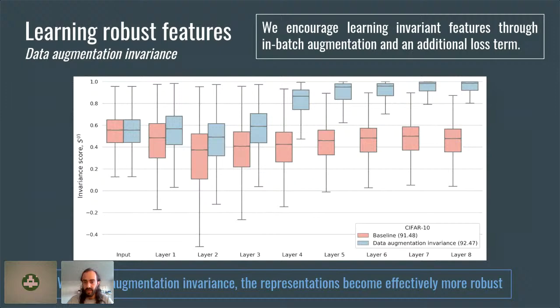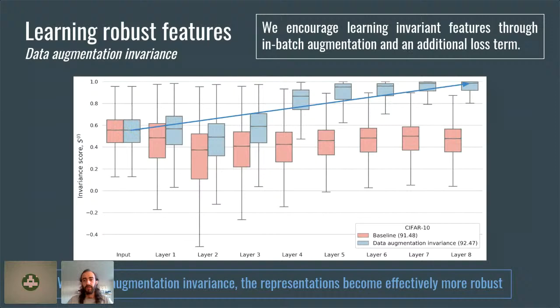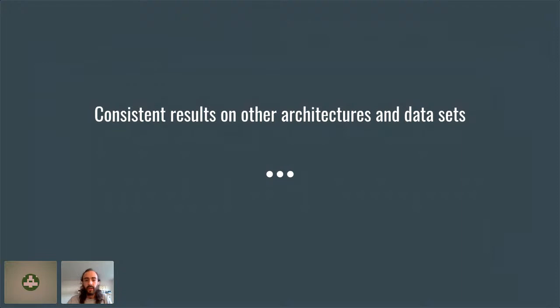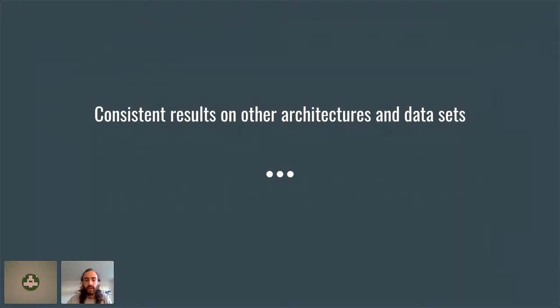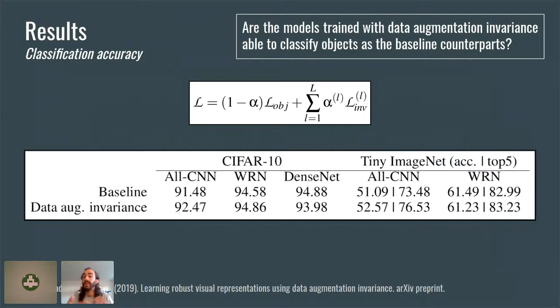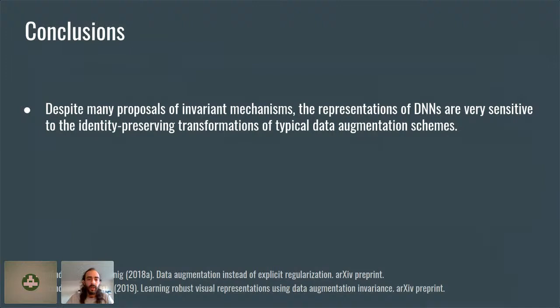Basically I compute the ratio between the similarity of images that are transformations of each other and the average similarity, then jointly optimize the invariance and categorical objectives weighted by alpha. Results: with the baseline network we had poor invariance, but training with data augmentation invariance (shown in blue) the representations become effectively more robust, as we would expect from the visual cortex. Importantly, classification accuracy does not degrade at all — in some cases it even improves. So data augmentation invariance adds a kind of regularization. To conclude: baseline DNNs trained with supervised categorization are not robust to identity-preserving transformations, but this simple change achieves an effective and efficient mechanism for robust representations.